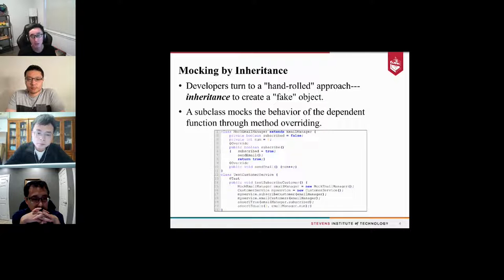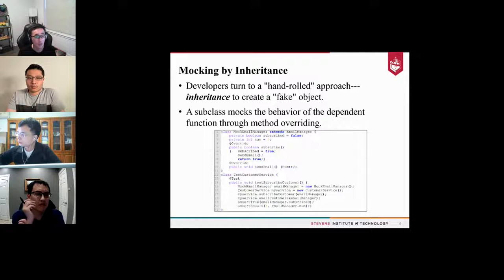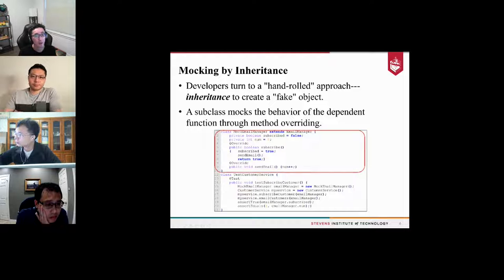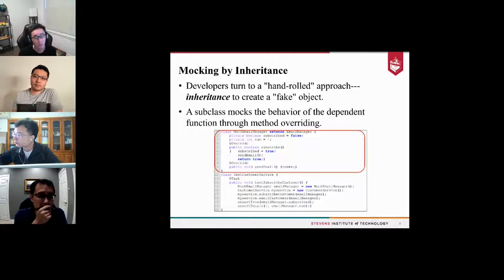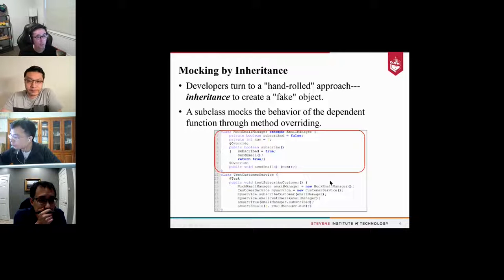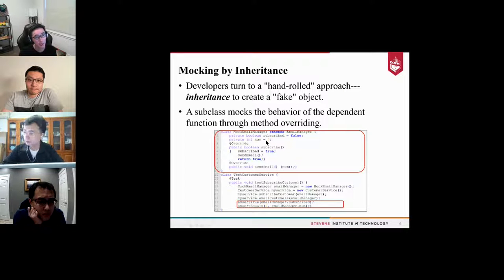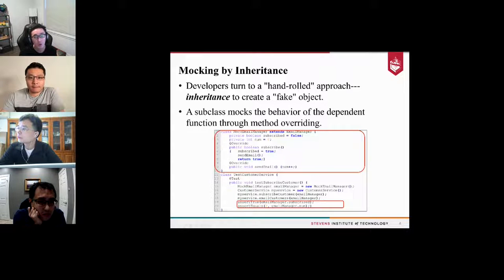Despite the existence of powerful dedicated mocking frameworks, developers often create a subclass of the dependent class and block its behaviors through method overriding. This requires tedious implementation and compromises the design quality of the test. For example, if a developer uses inheritance to create the mock object, they need to create a subclass, overwrite the methods of the dependent functions, and use that subclass as a mock object. In this example, the subclass extends the parent class EmailManager and creates two fields to track the execution status of the subscribe and sendEmail methods.